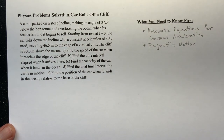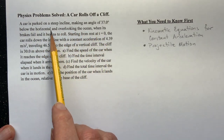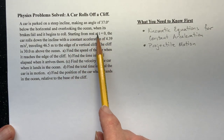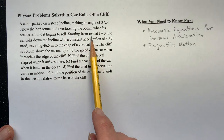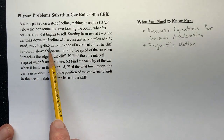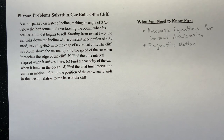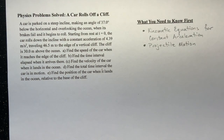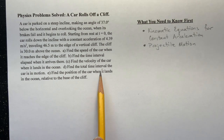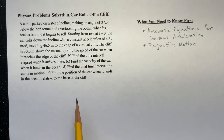Today's problem is a long one — five parts. A car is parked on a steep incline making an angle of 37 degrees below the horizontal, overlooking the ocean. Its brakes fail and it begins to roll from rest at t=0, accelerating at 4.39 m/s² down 46.5 meters to the edge of a vertical cliff 30 meters above the ocean. Parts: A) speed at cliff edge, B) time to reach the edge, C) velocity when it lands in the ocean, D) total time in motion, E) position relative to the base of the cliff.